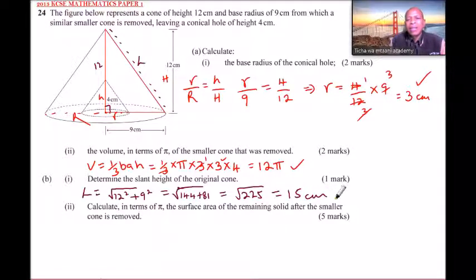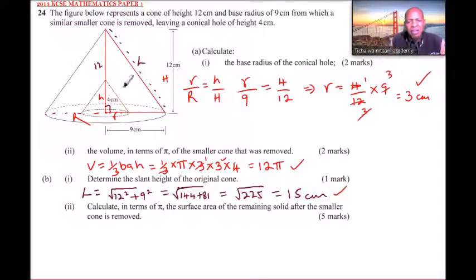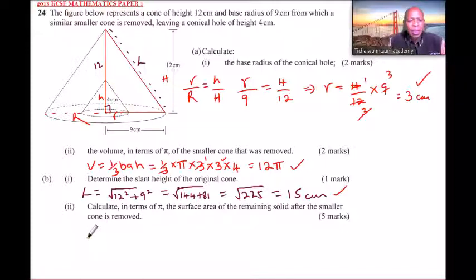There you get one mark. Since you can work it out directly — square root of 12 squared plus 9 squared — that's why only one mark is awarded. I've shown the method in detail in case you get confused.